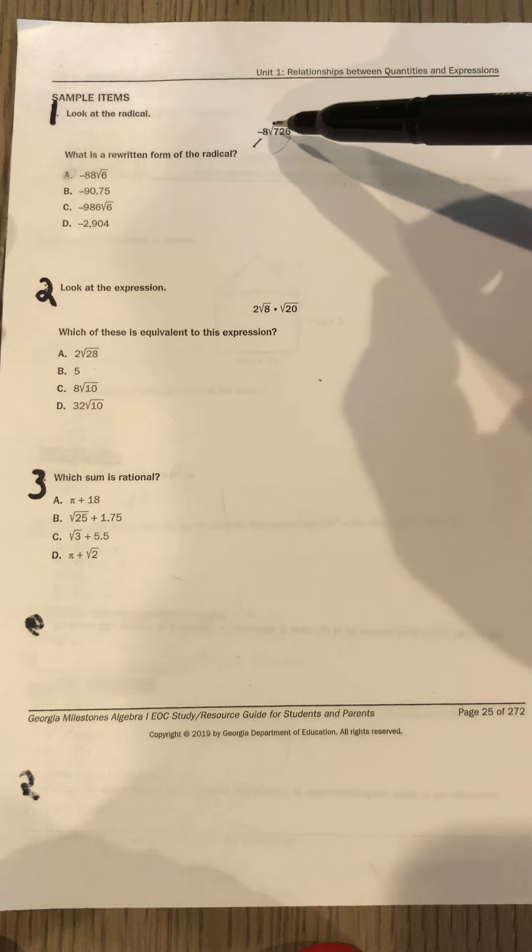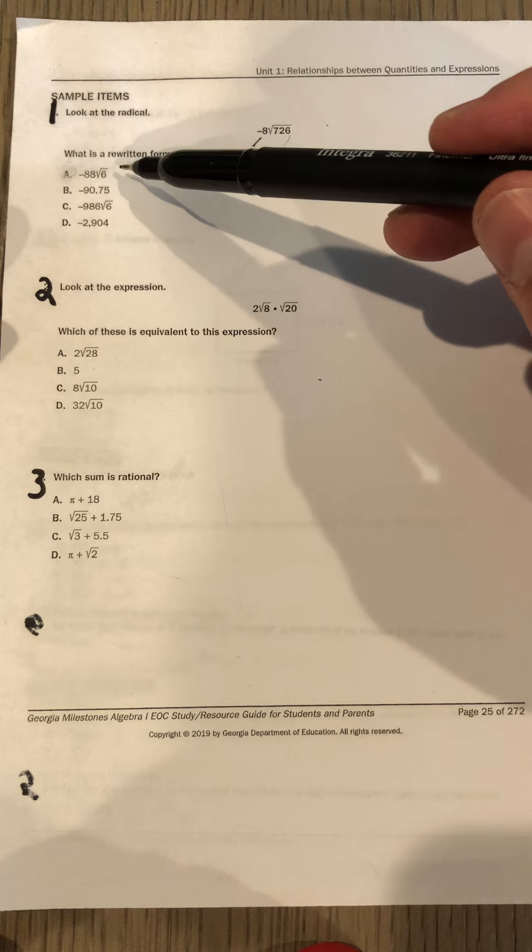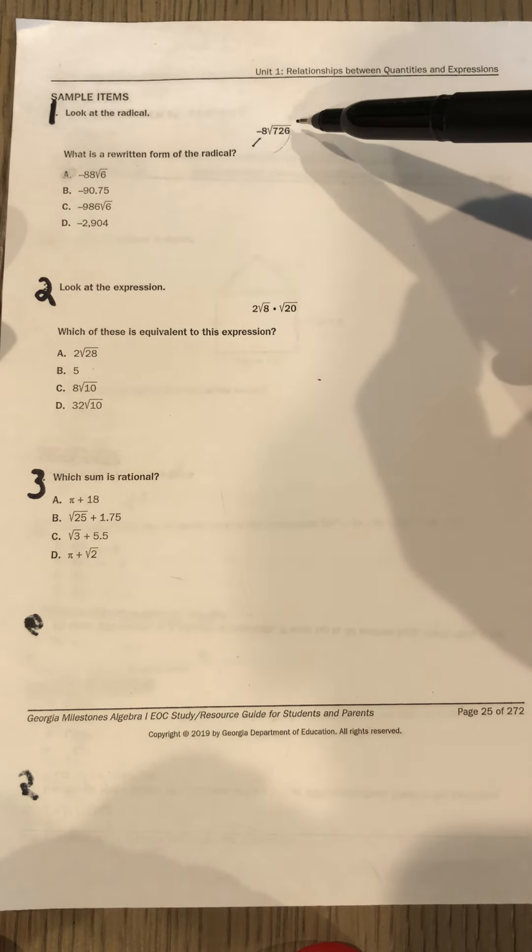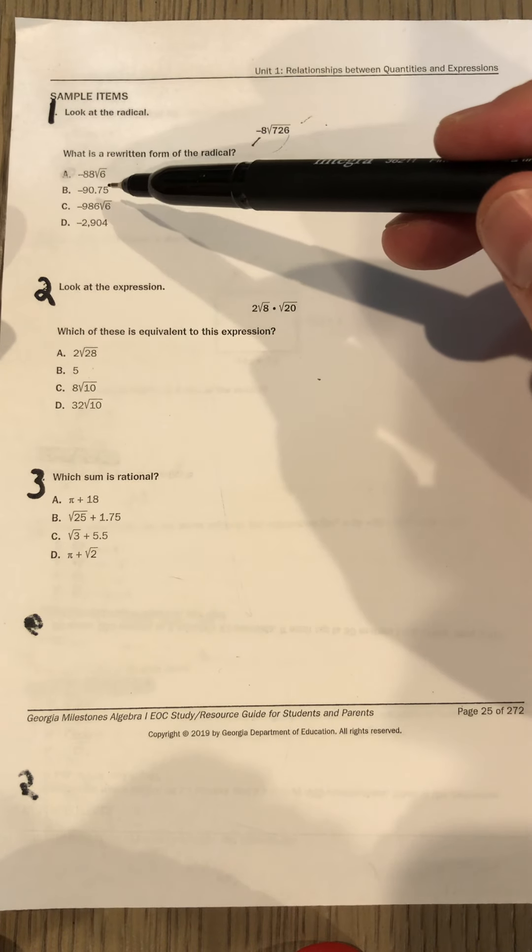So, for example, negative 8 root 726 gives you a decimal. If you plugged in negative 88 root 6, if it's the same decimal as that, that's your answer. If it's not the same decimal as that, move on to choice B.